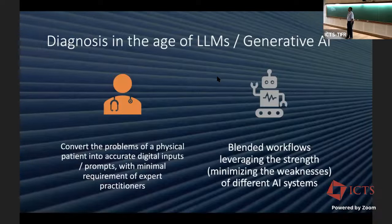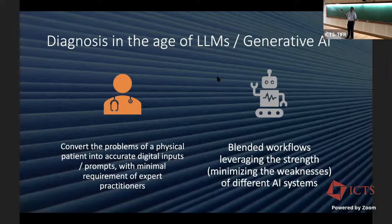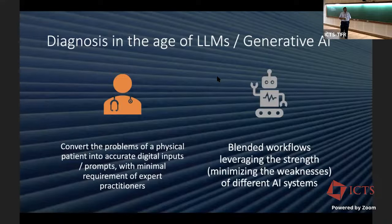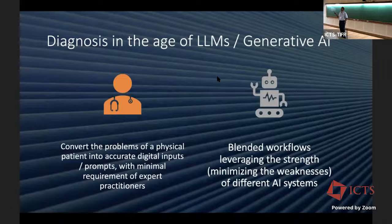The biggest challenge for GPT-4 or any of these systems is they require the information to be given to them. Who is going to give them the information? A smart doctor who has already elicited and processed the information. We elicit information as we think. So requiring an expert to first elicit information and then feed it to GPT is wasting time. The only way out is if the problems of a physical patient are converted into accurate digital inputs and prompts with minimal requirement for an expert practitioner — and then you create blended workflows that leverage the strengths and weaknesses of different AI systems.